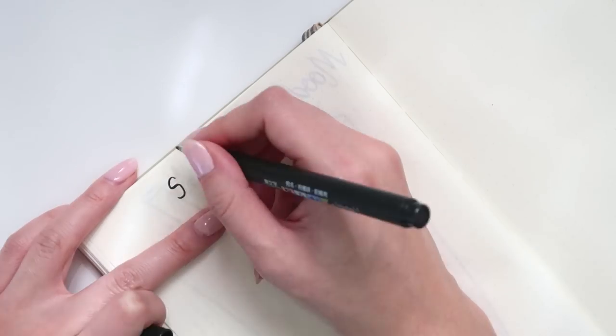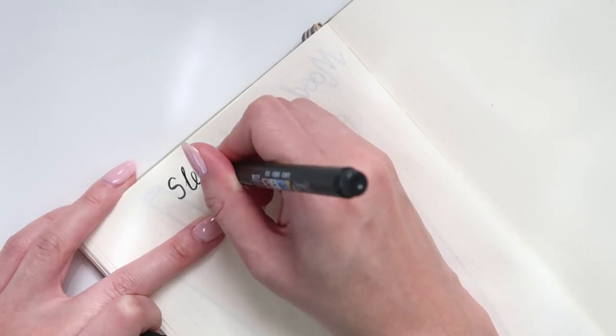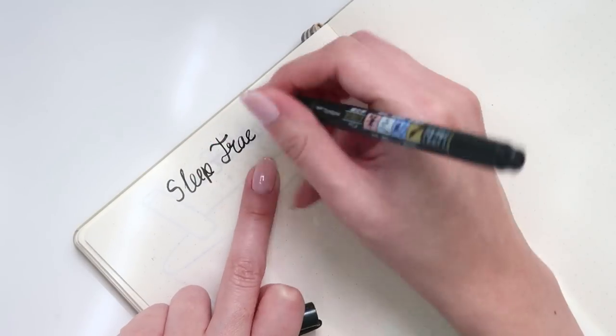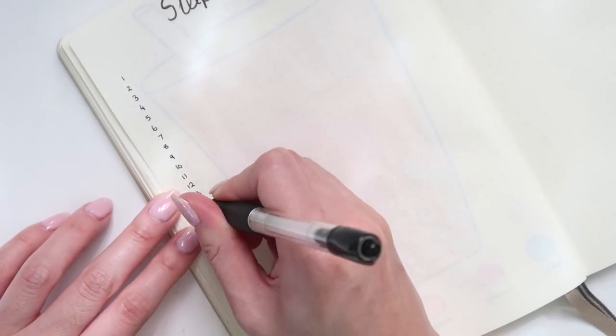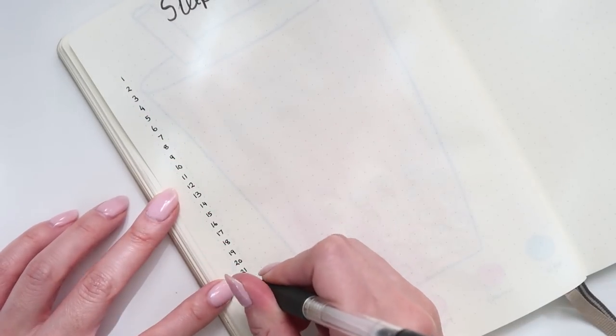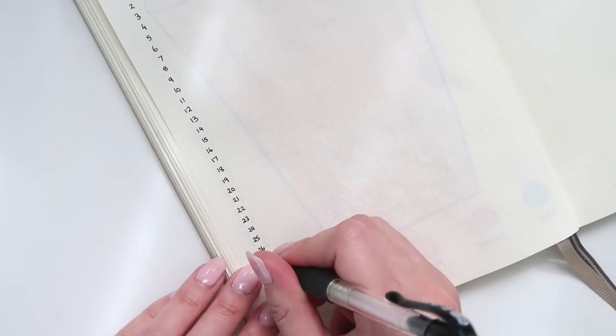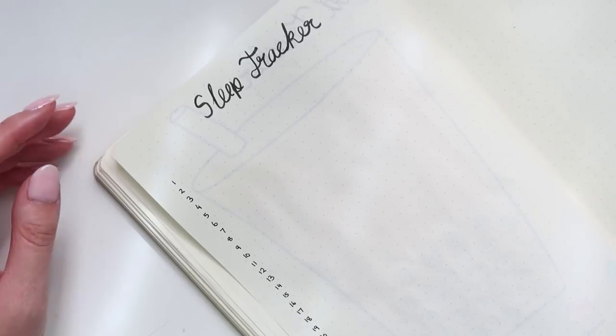Okay, so next page, this has been my sleep tracker for the month, and I'm going to be taking on a very similar layout to my time tracker. It's actually almost identical. You've got your days and your dates on the side, and then on the top I've mapped out the hours, and each day I'm just going to draw a bar that represents how many hours I've slept for that night.